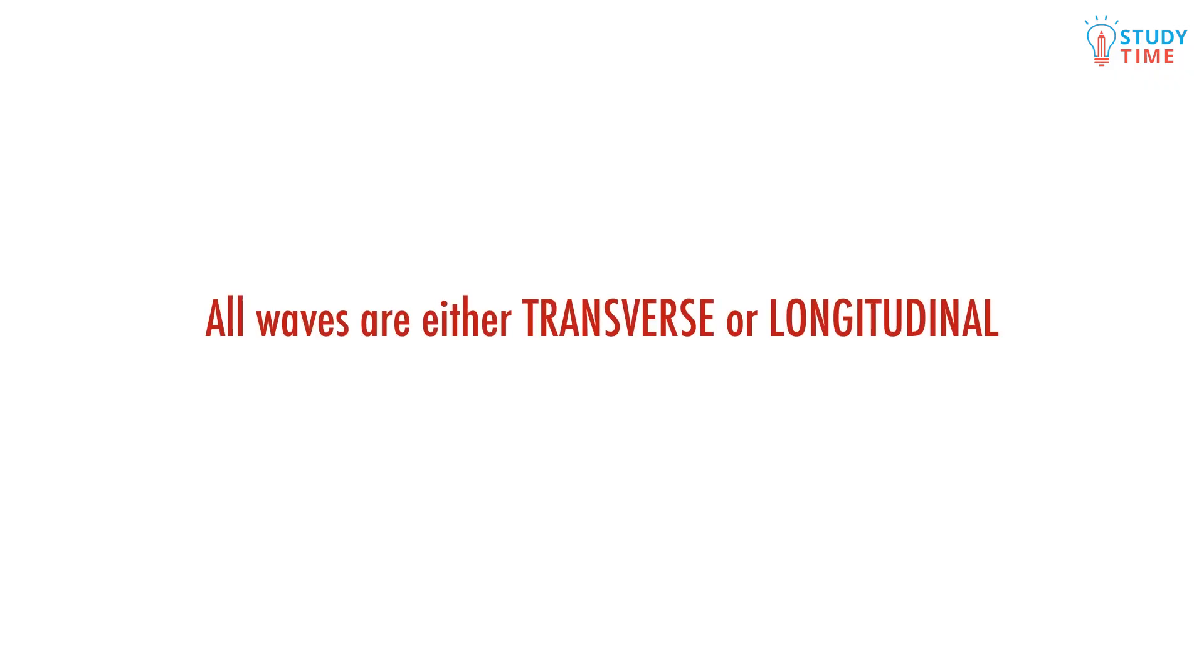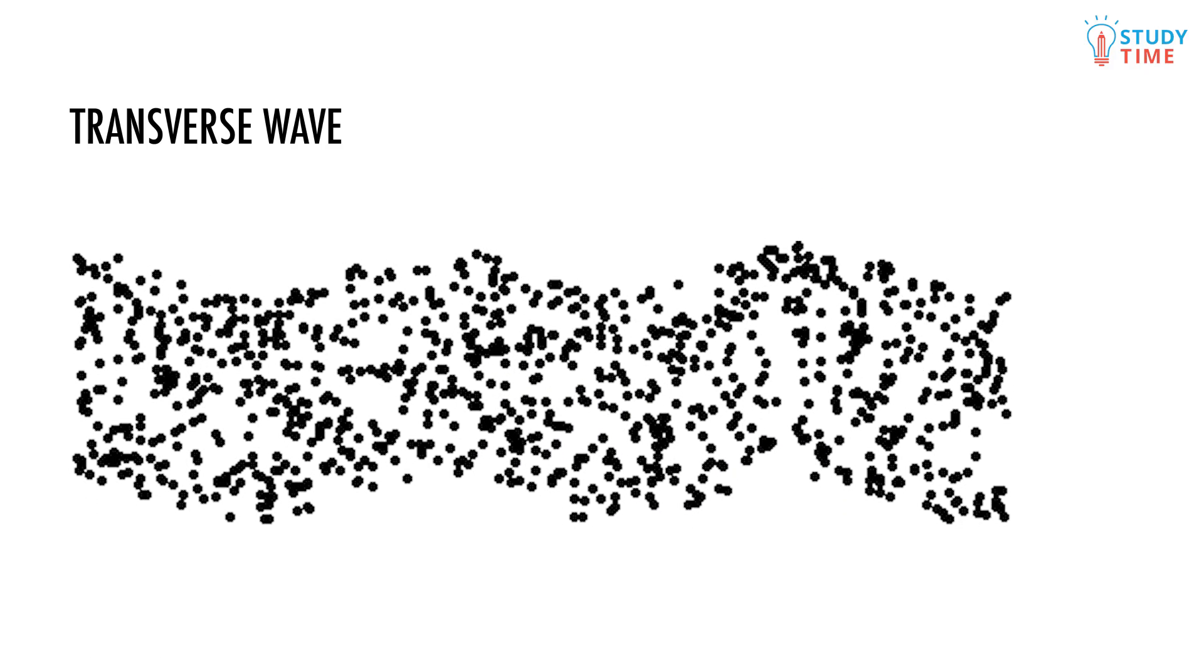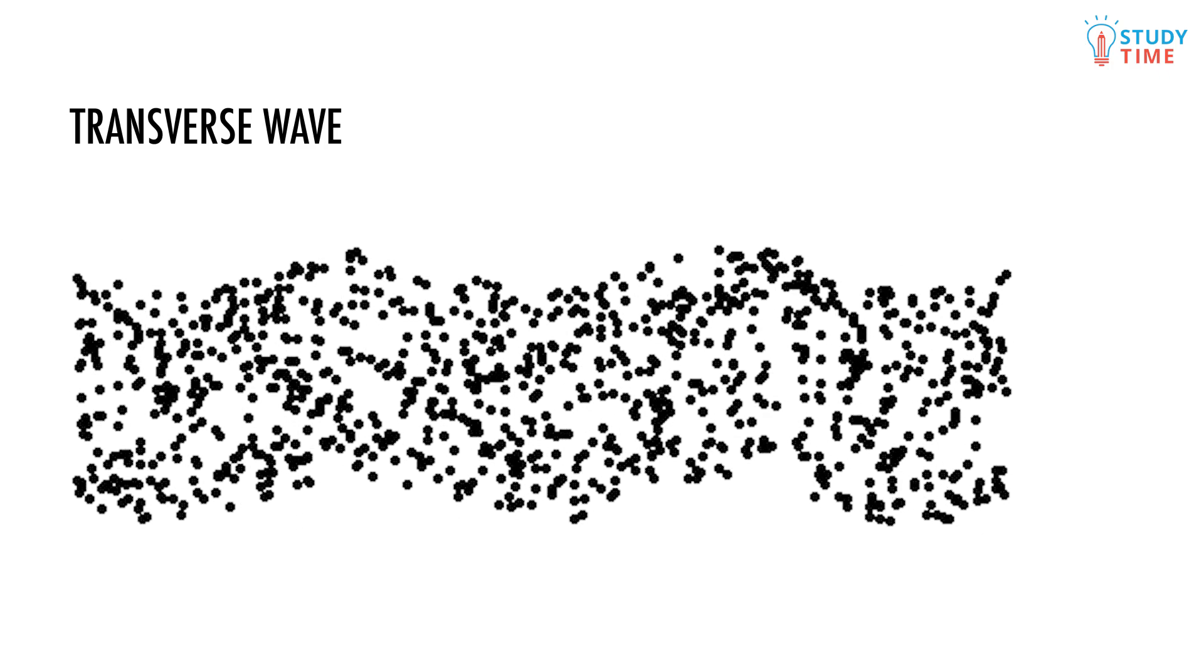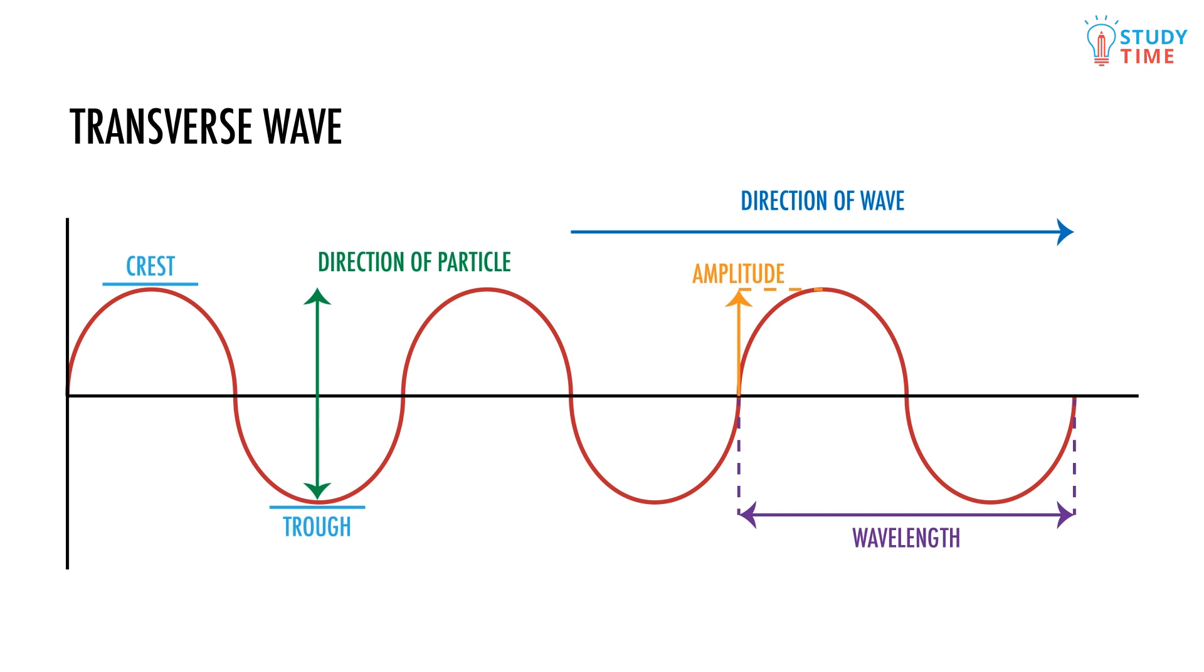All waves are either transverse or longitudinal. Transverse waves look like this. You can think of a transverse wave as being like ocean waves. The particles move up and down, but the energy moves, let's say, from left to right. Transverse waves are made up of high points called crests and low points called troughs. The height of a crest or trough is called the amplitude. The distance between two crests or two troughs is called the wavelength.